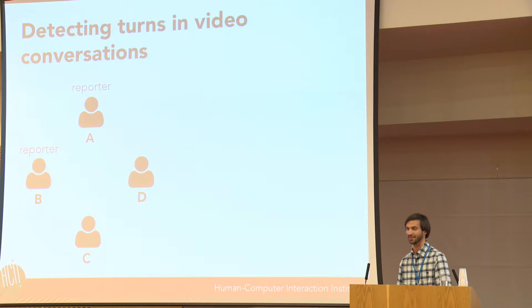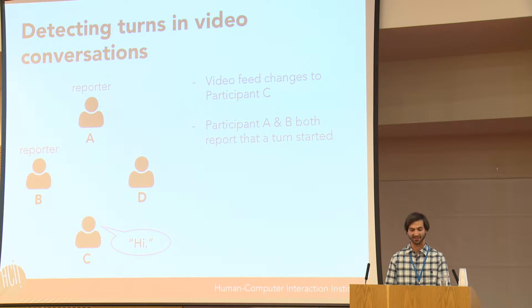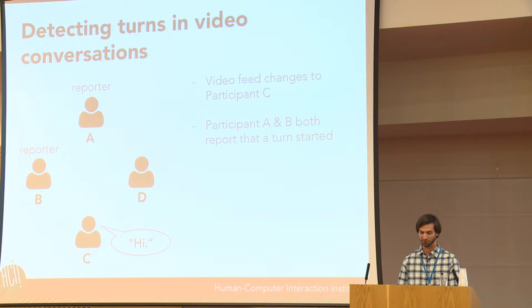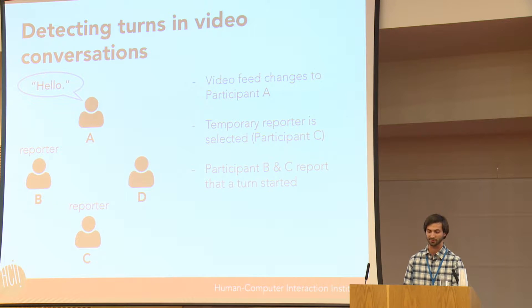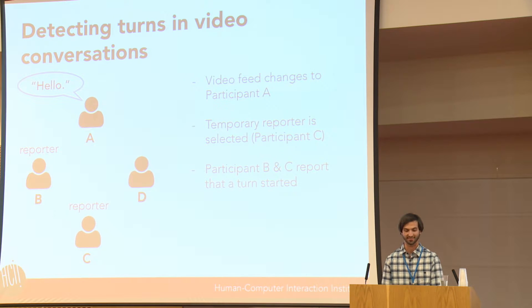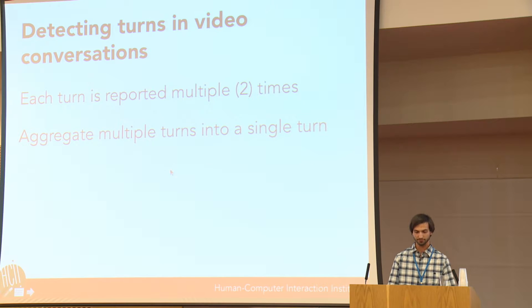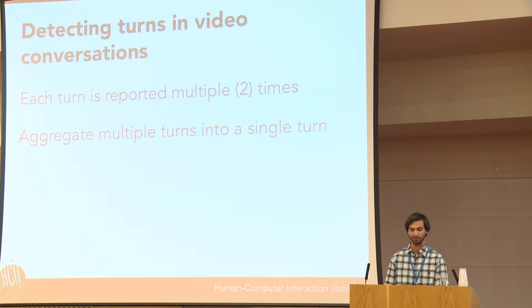The reporting happens automatically behind the scenes, so participants don't know they've been selected as a reporter. For example, let's say participant C starts off the conversation. The two reporters—participants A and B—indicate that the primary video feed changed due to participant C starting to talk. When participant A then responds, because participant A was a reporter, they cannot report themselves since the Google Hangouts API does not indicate the video feed changed when you begin talking yourself. So our turn detector assigns a temporary reporter while participant A is speaking, and both reporters confirm the new participant is talking. Each conversational turn may be reported multiple times, and the turn detector aggregates those into a single turn.